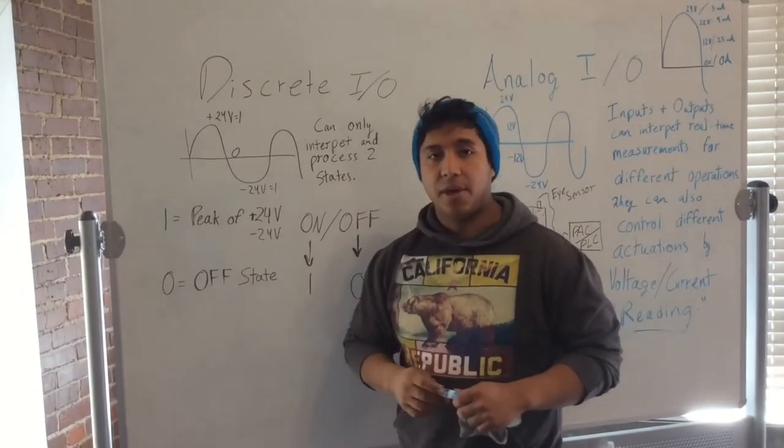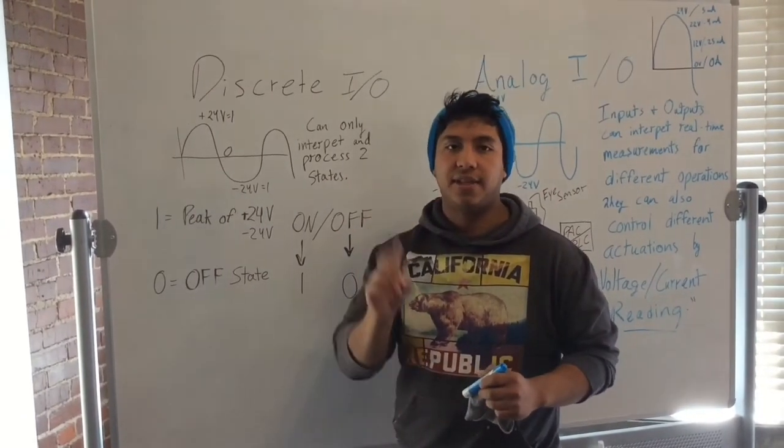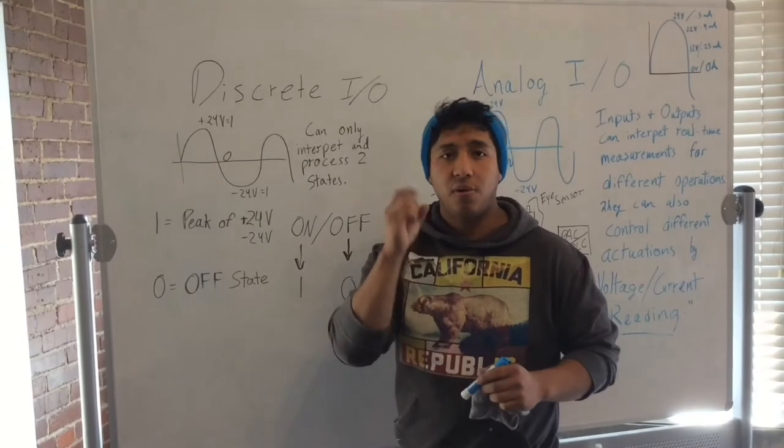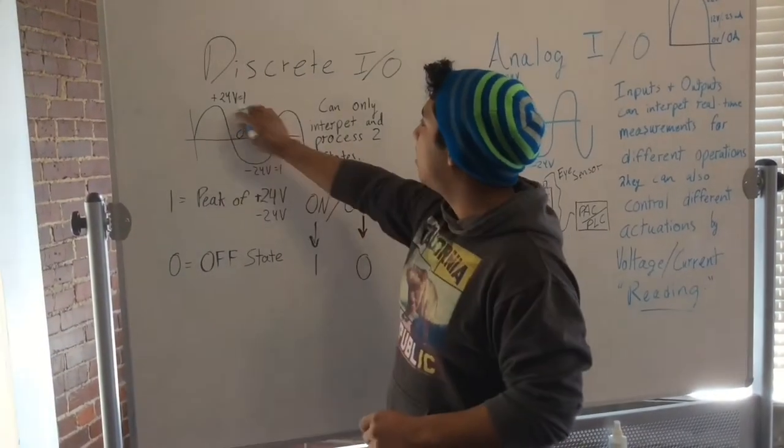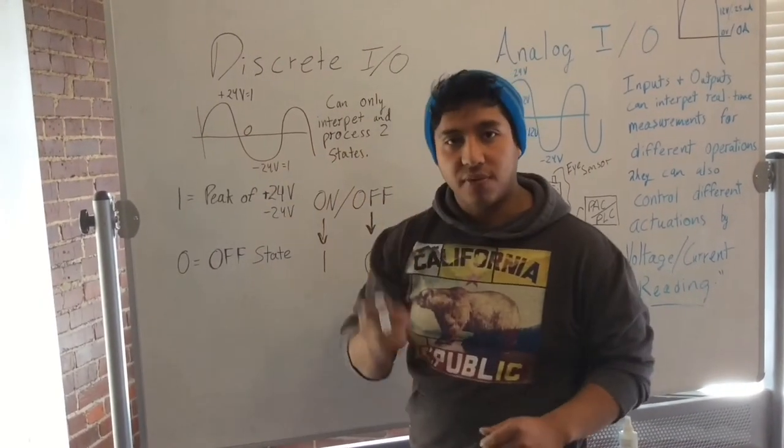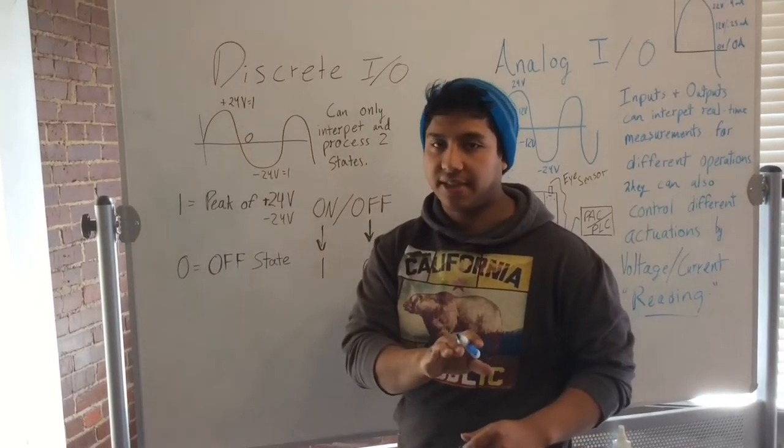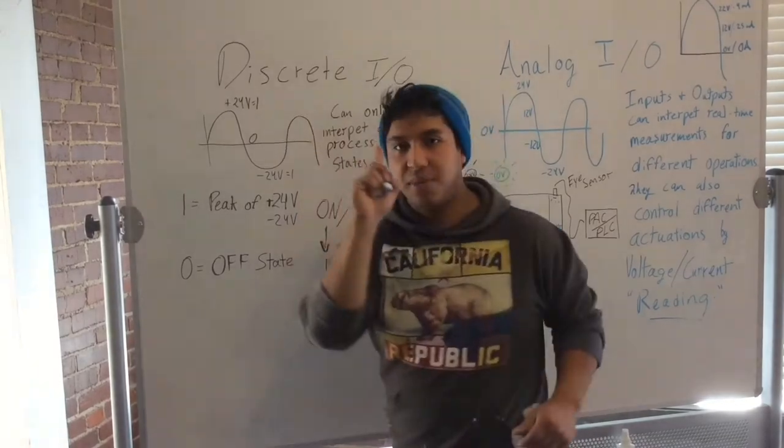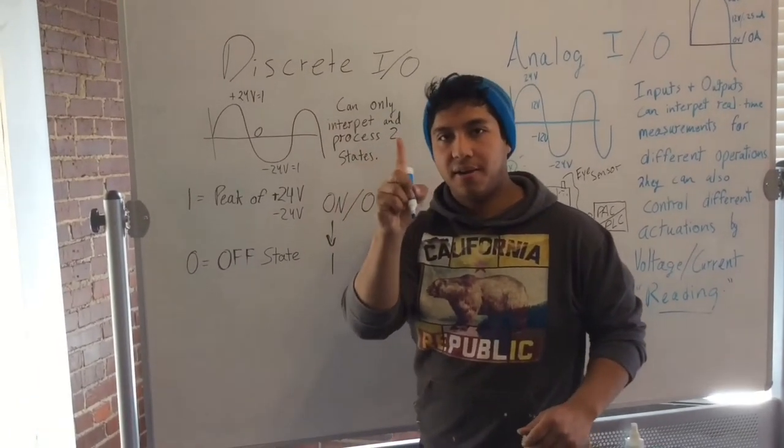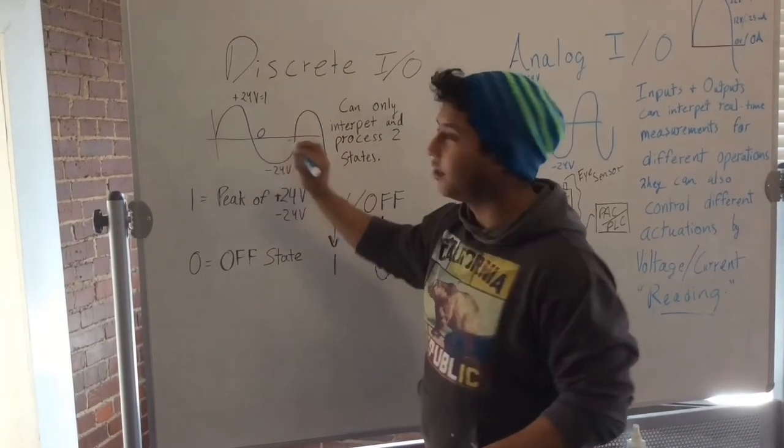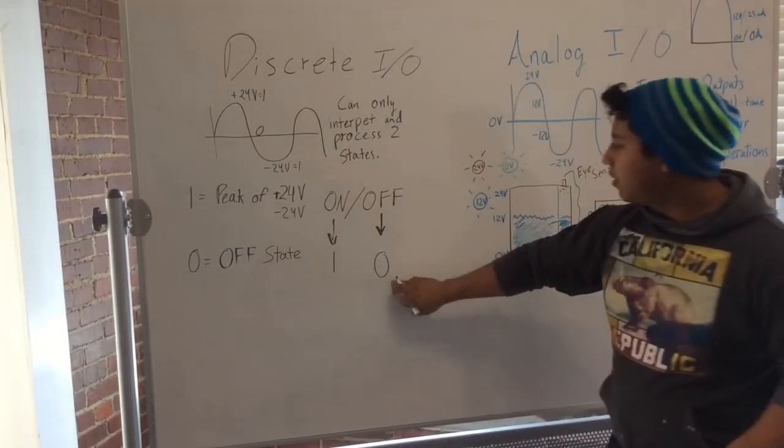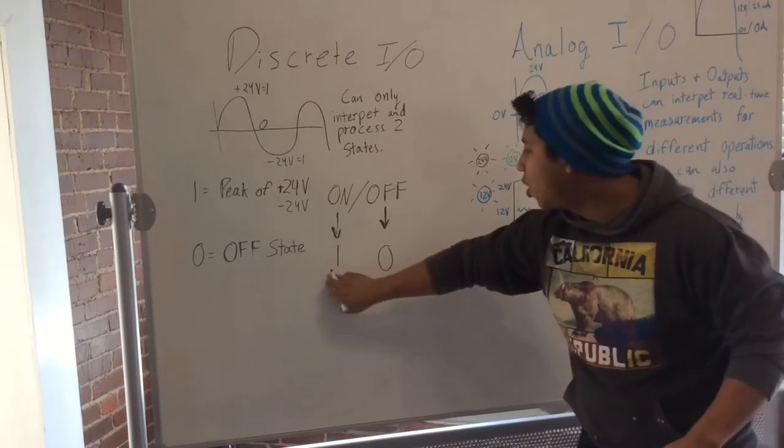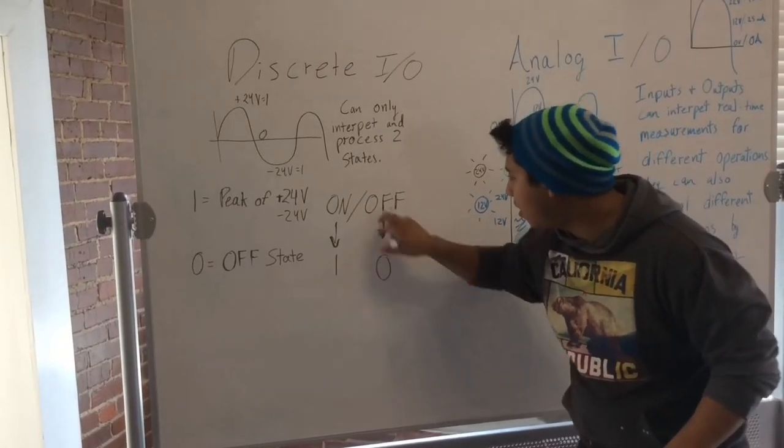The discrete input and output modules are going to only understand two states, which is zero or one, off or on. And the way that works is that once it reaches to the peak of 24 volts, I'm using that as an example, that is going to be the on state, one. But once it reaches down to zero, or the off state, that is going to be off state zero. So that's going to be your binary. One, on, zero, off.